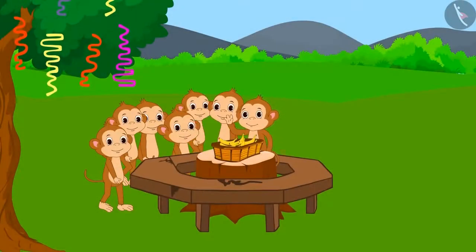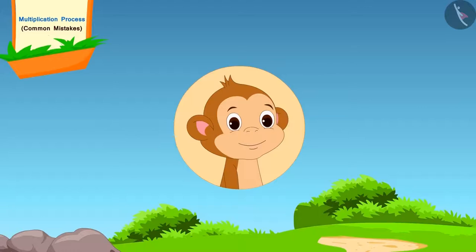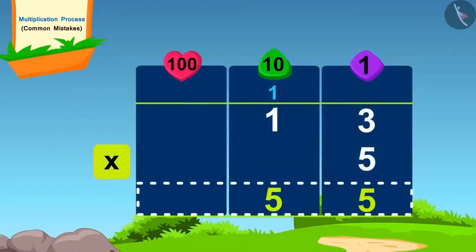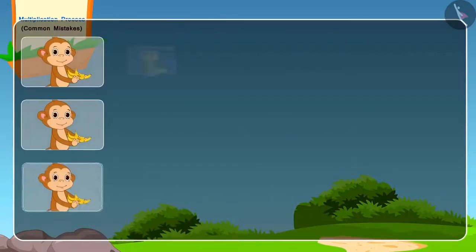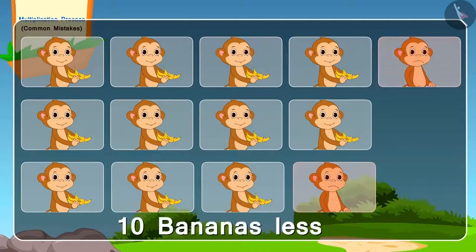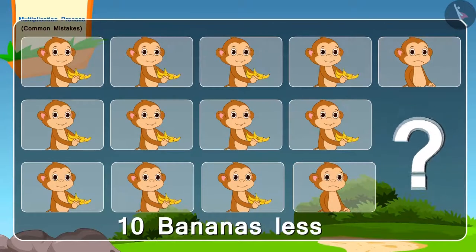Monkeys were also present in the party. There were 13 monkeys in total and each monkey needed 5 bananas. Let's see how the monkeys found the total number of bananas needed. Now, when they started distributing bananas, they realized they were short by 10 bananas. Can you tell where the monkeys went wrong?